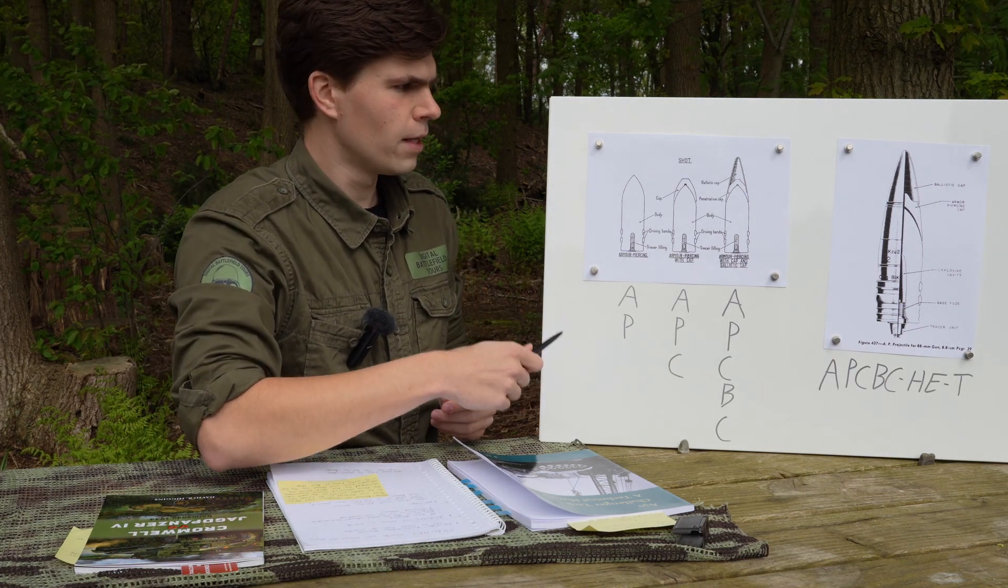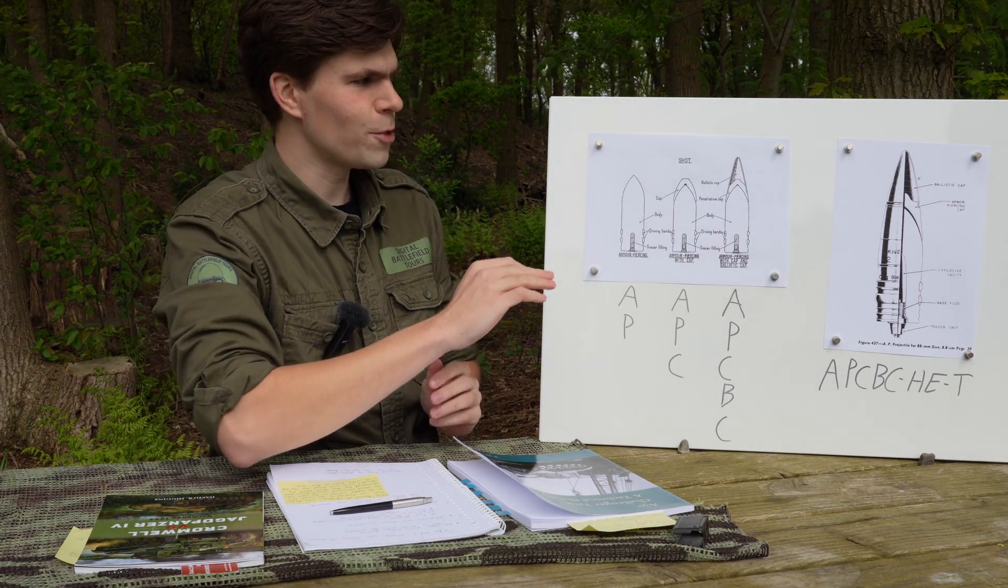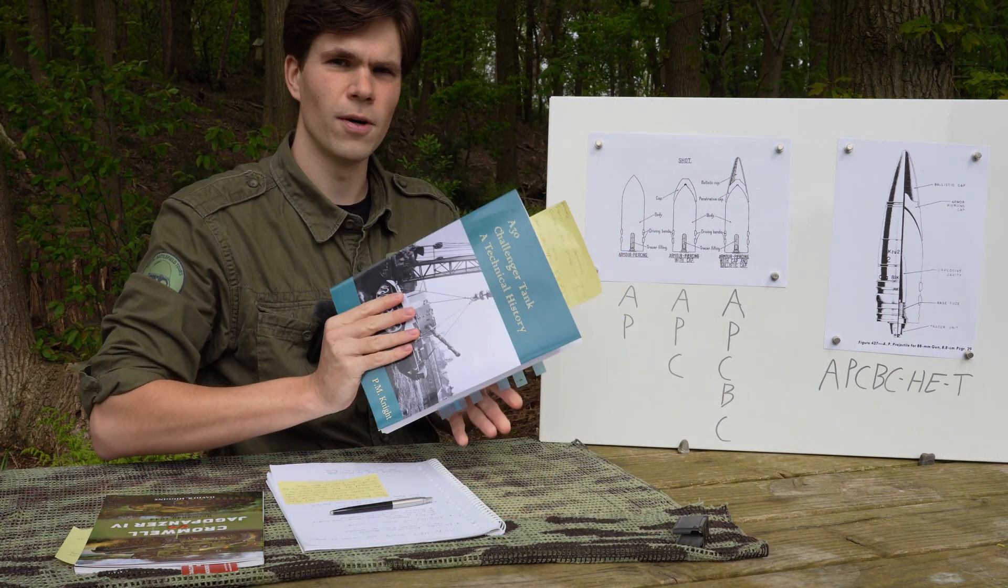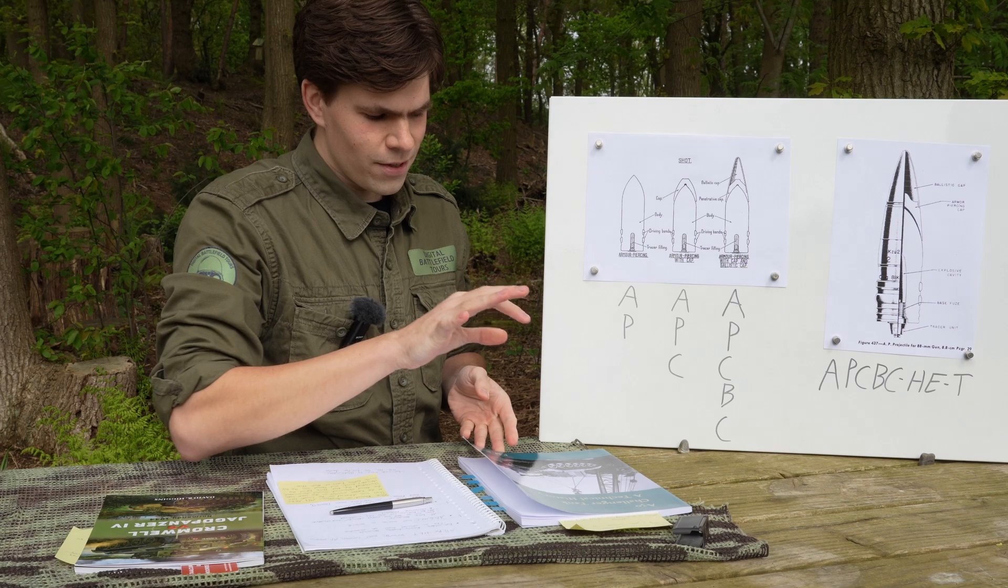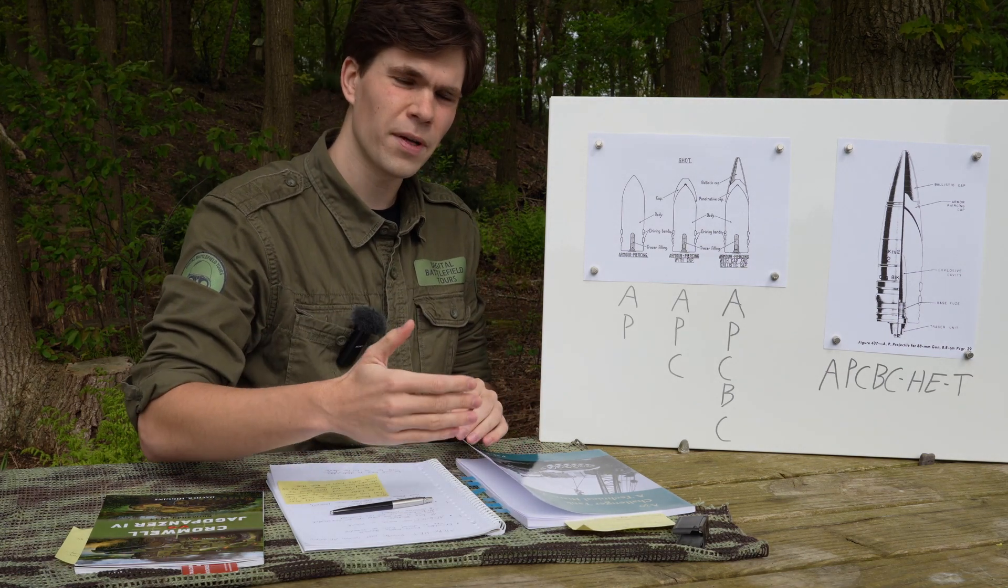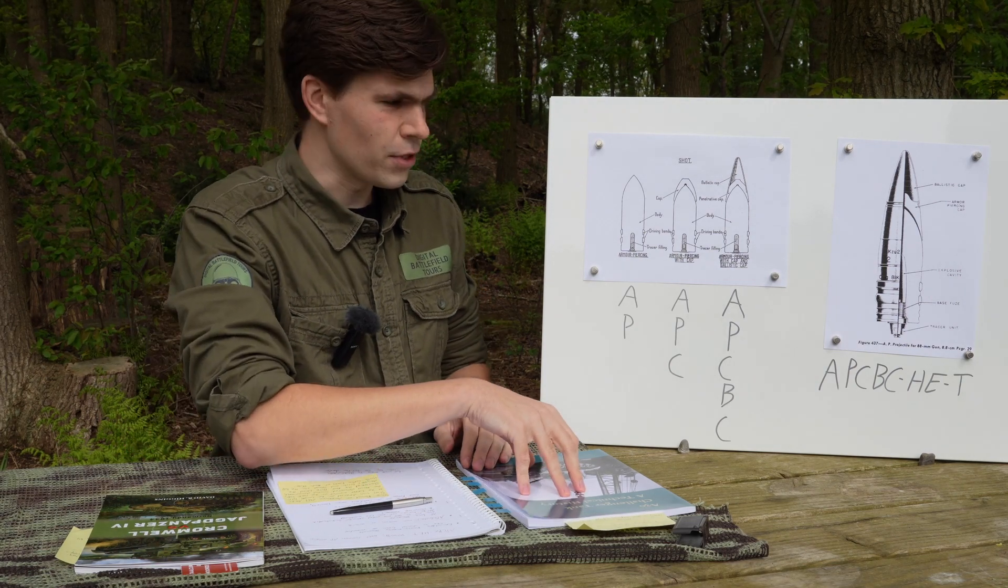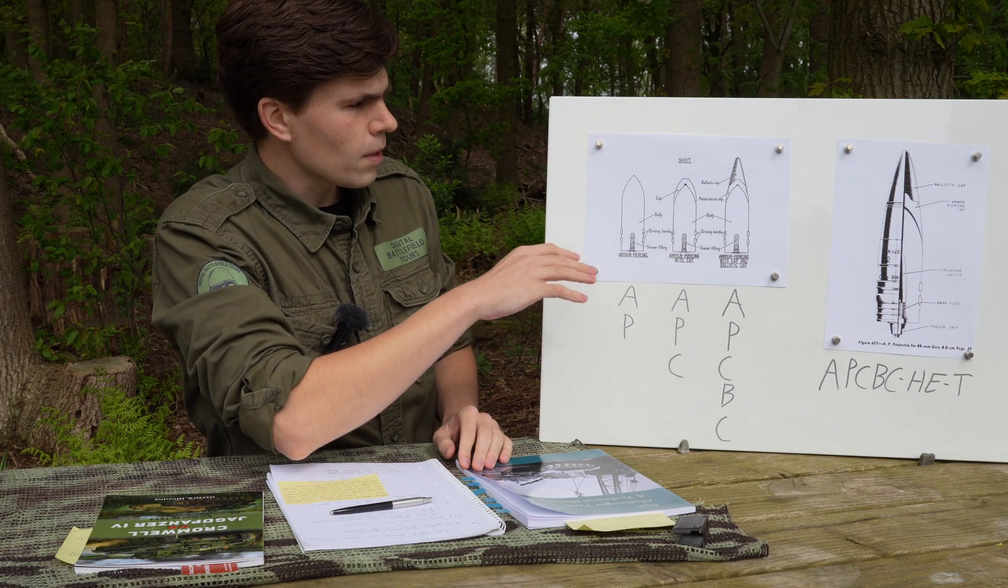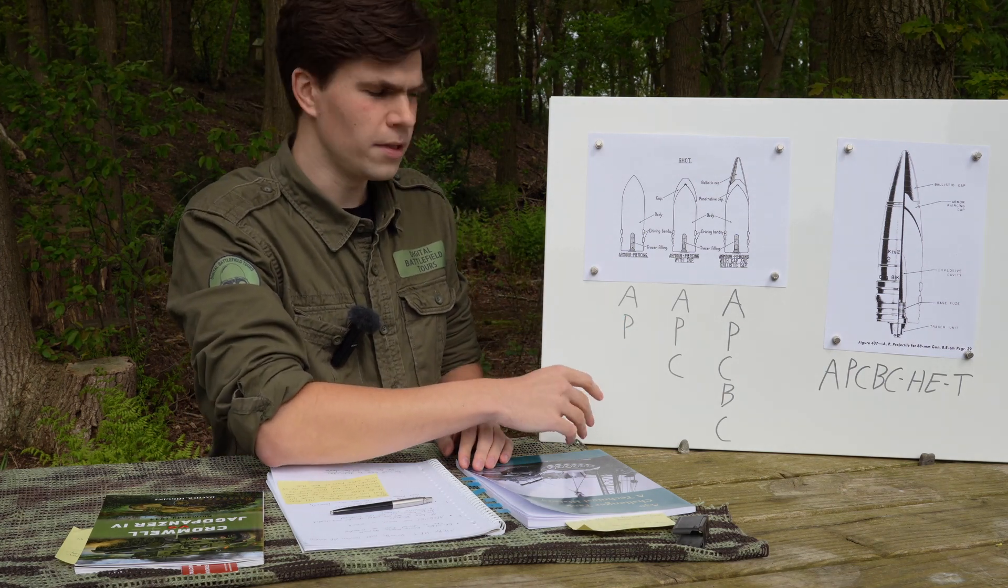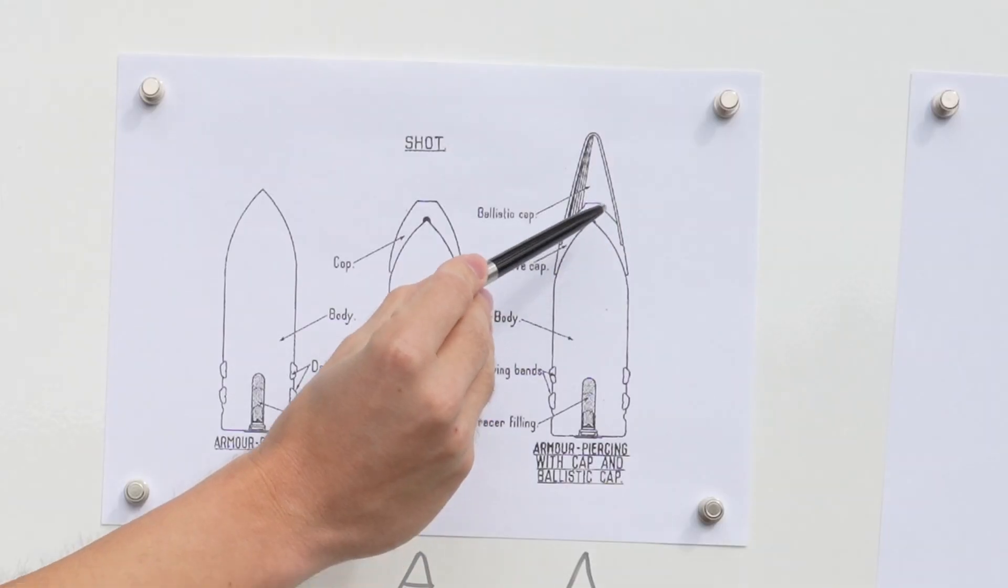That gives us APCBC - armor piercing with a cap with a ballistic cap - which most armies ended up using as their primary kinetic anti-tank round. There's a fun story actually with these ballistic caps which has to do with the Challenger. As the Challenger was designed as a version of the Cromwell that can take the big 17 pounder gun, at the moment the Challenger was designed the 17 pounder wasn't yet using APCBC.